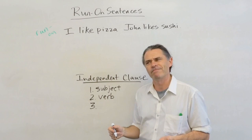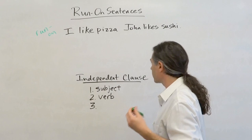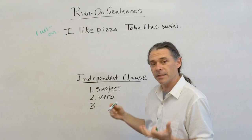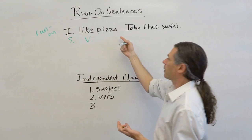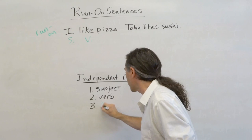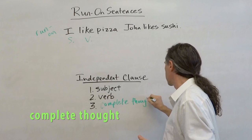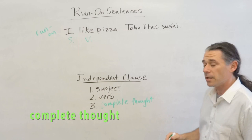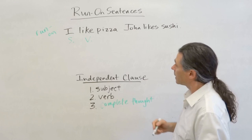This is tricky. Let's go back to our example here. If we say I like pizza, this is an independent clause, because we have a subject, we have a verb, and what is that third thing that we have? This is the magical thing. We have a complete thought, or a complete idea. Subject, verb, complete thought. When you have these three things, you have an independent clause, and it can stand on its own.